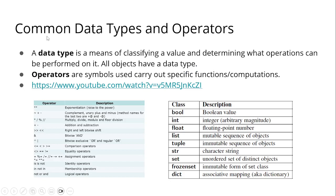Next slide is common data types and operators. A data type is a means of classifying a value and determining what operations can be performed on it. All objects have a data type. Operators are symbols used to carry out specific functions and computations. For example, double asterisk (**) is exponentiation or raised to the power.